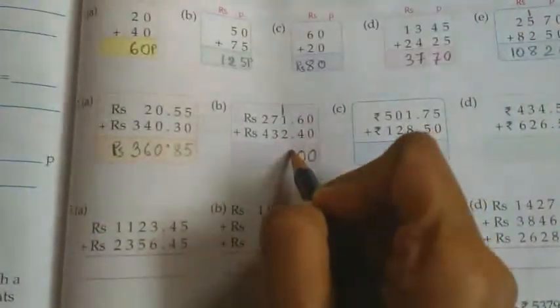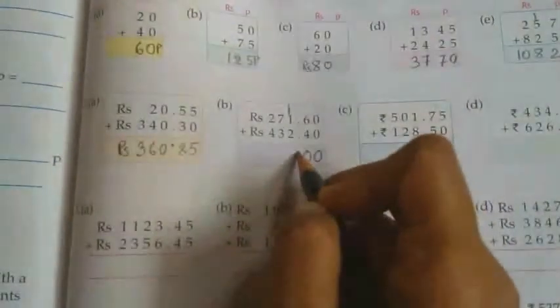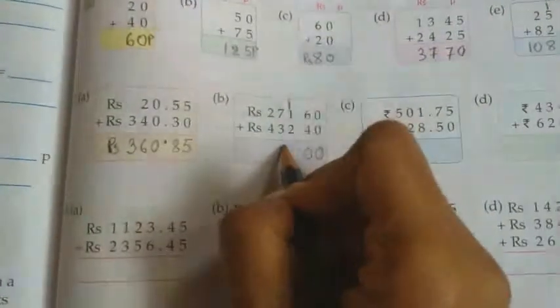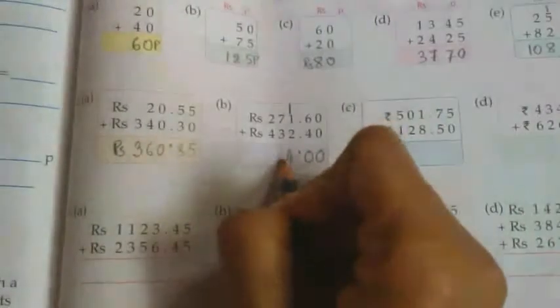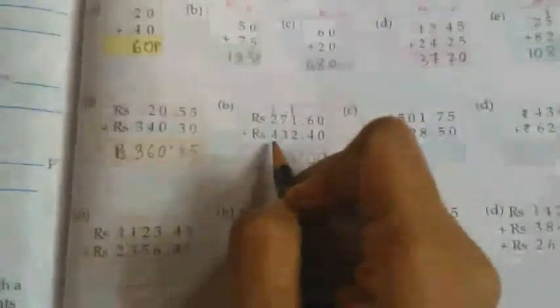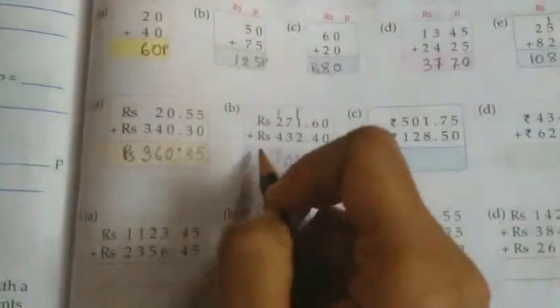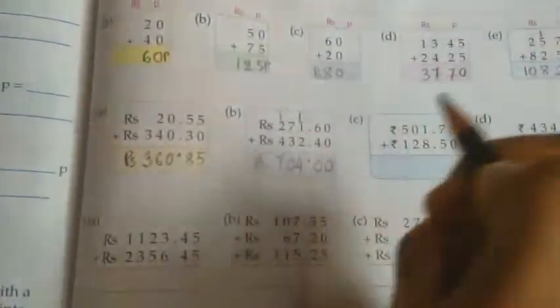We will put the point after 2 paise. Because after 2 paise point is given. Now 1 plus 1 equals 2, 2 plus 2 equals 4. Now 7 plus 3 equals 10, write 0 here, carry 1. 1 plus 2 equals 3, 3 plus 4 equals 7. So answer is 704 rupees.